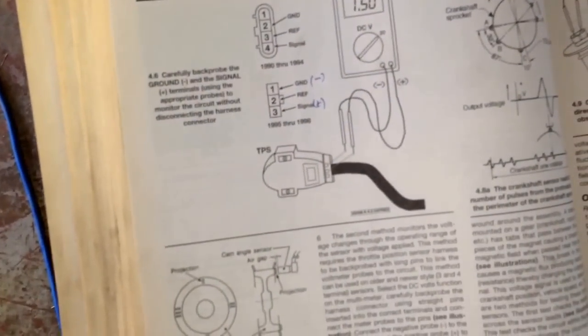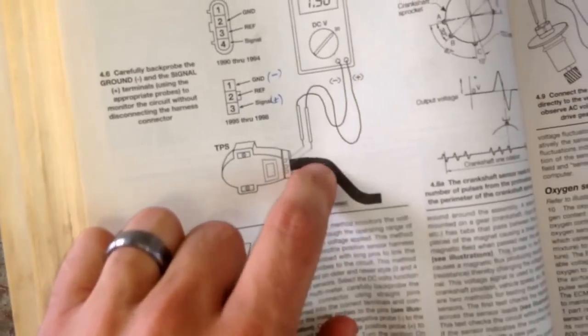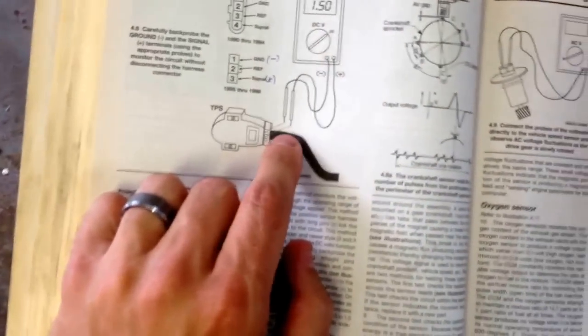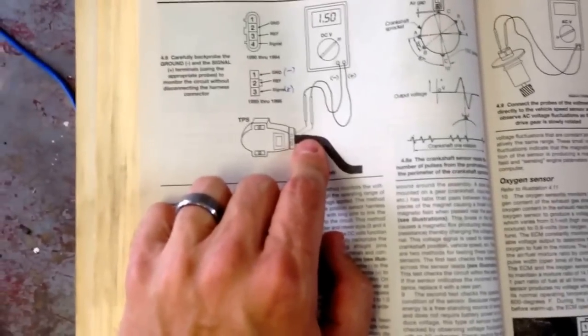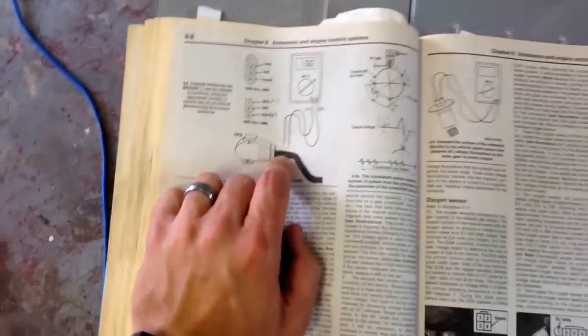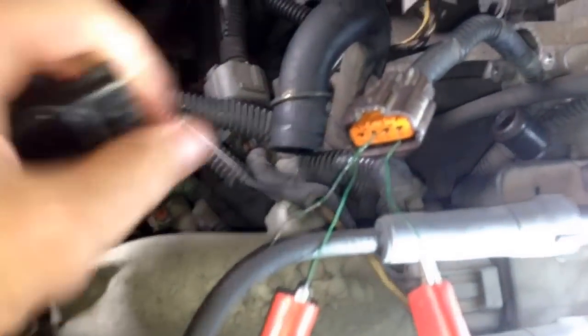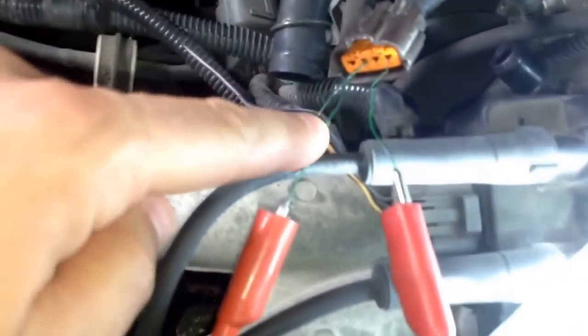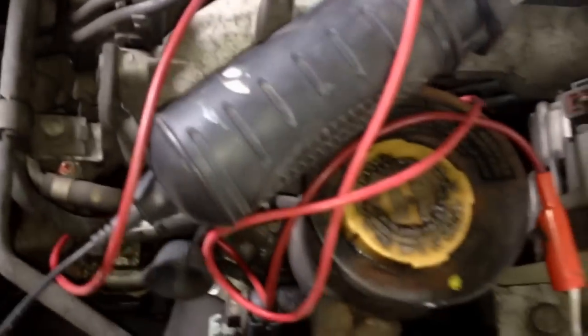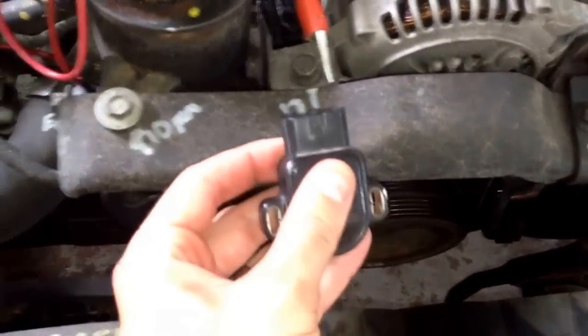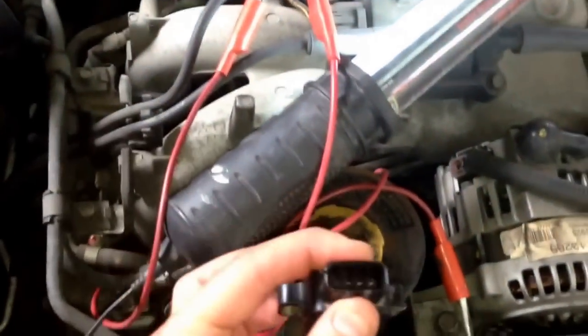On page 68 it tells you exactly what to hook up. The ground to the first pin, hook up the positive to the signal to the third. Problem is this is really hard to, I don't have a back probe kit and it's hard to back probe this harness because it has a sealed grommet.